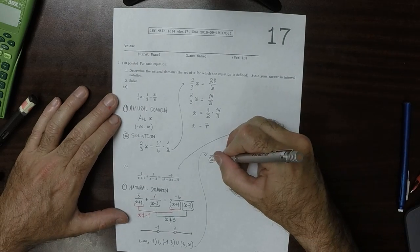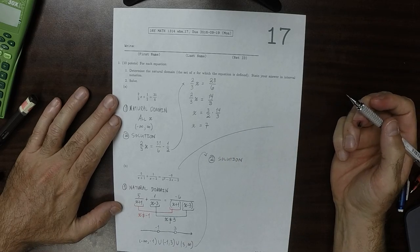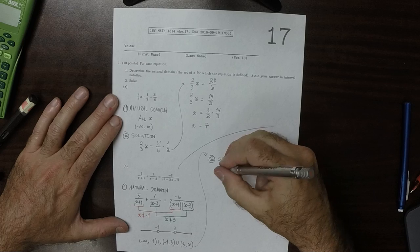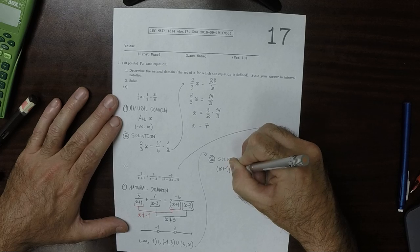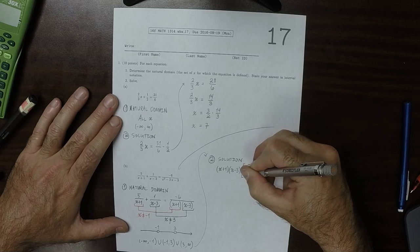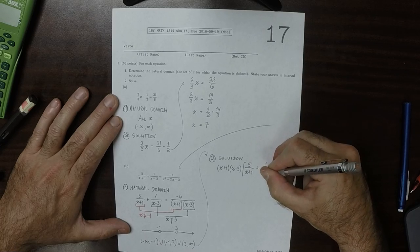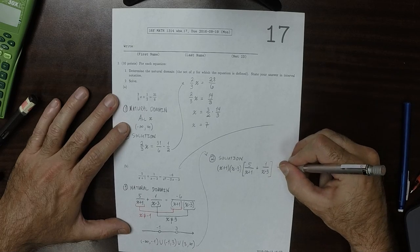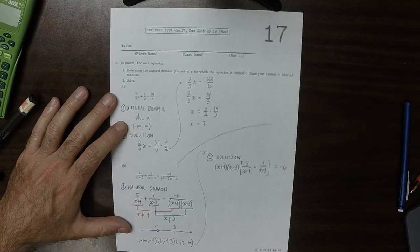And then the solution. Okay. Starting from this equation, I'll multiply both sides by the denominator of the right-hand side. That would be x plus 1 multiplied by x minus 3. The left-hand side is going to be multiplied by that, so 5 over x plus 1 plus 1 over x minus 3 is equal to negative 6. Because we multiplied this denominator to the left-hand side.